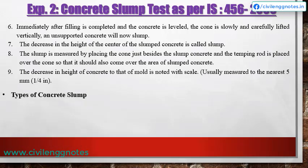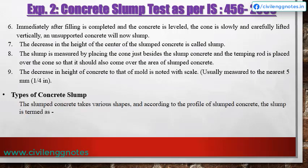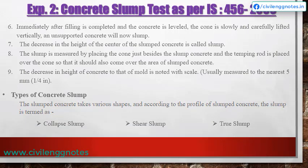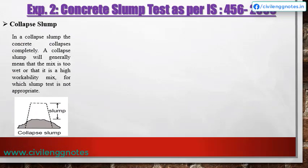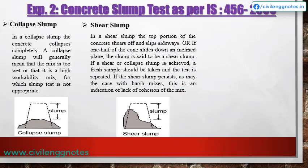Types of concrete slump: The slump is termed as collapse slump, shear slump, and true slump. In a collapse slump, the concrete collapses completely — this generally means the mix is too wet or is a high workability mix for which the slump test is not appropriate. In a shear slump, the top portion shears off and slips sideways. If a shear or collapse slump is achieved, a fresh sample should be taken and the test repeated. If shear slump persists, it is an indication of lack of cohesion of the mix.